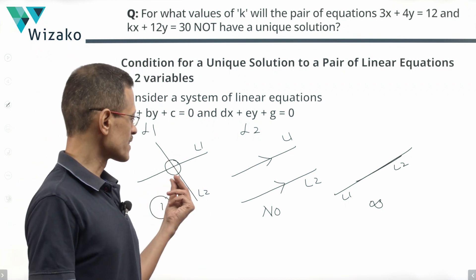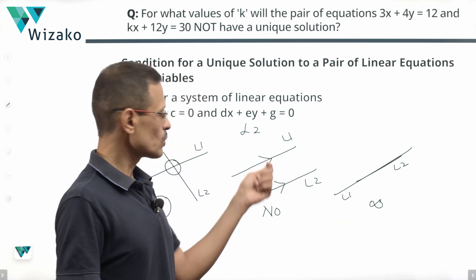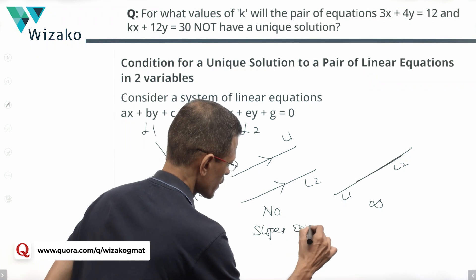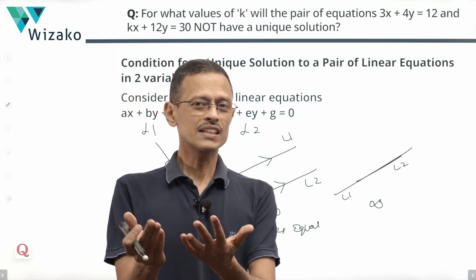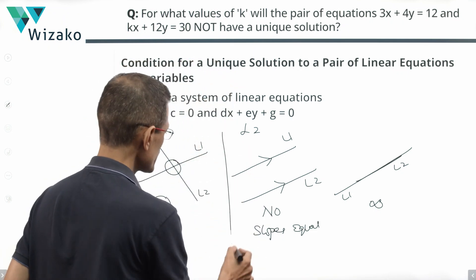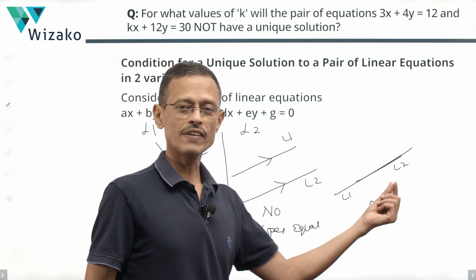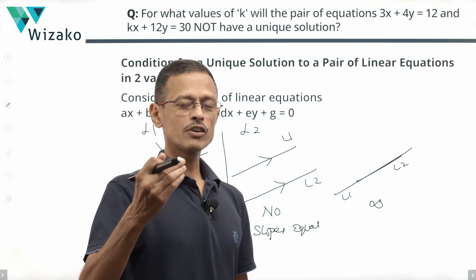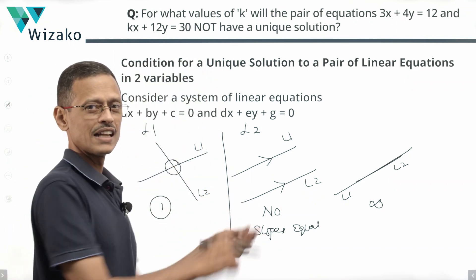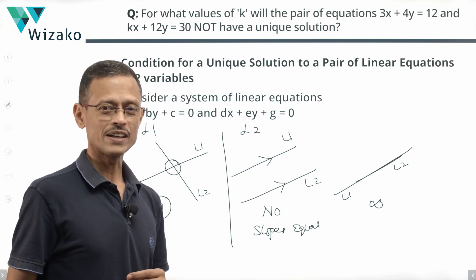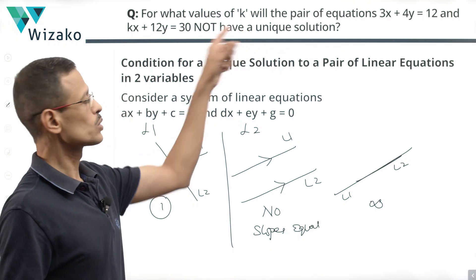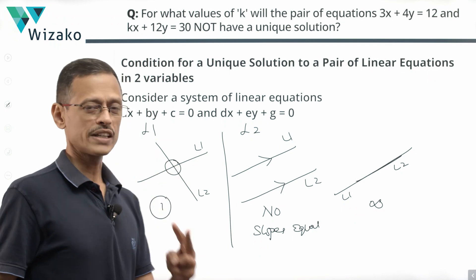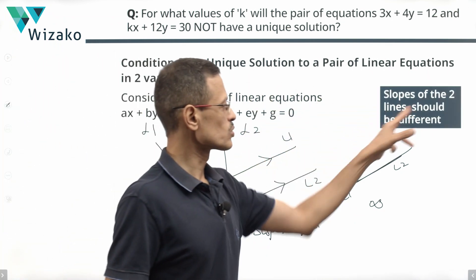Let's check when each case happens. If two lines are parallel, their slopes are equal. If two lines are coincident, their slopes are also equal. So for both the no-solution and infinite-solution cases, the slopes of the two lines are equal. When will we therefore have a unique solution? The lines should not be parallel and not be coincident — meaning their slopes should be different. So to have a unique solution, the slopes of the two lines must be different.